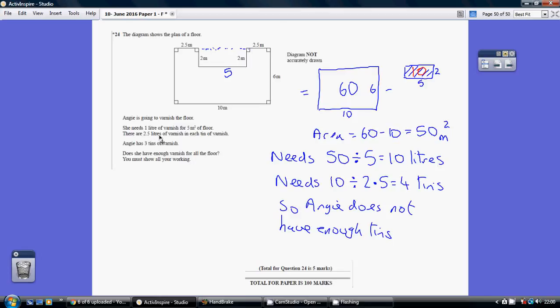Now there's 2.5 litres in a tin. 10 divided by 2.5 is 4 so we need 4 tins. Angie's got 3 tins so no we do not have enough varnish for the floor.